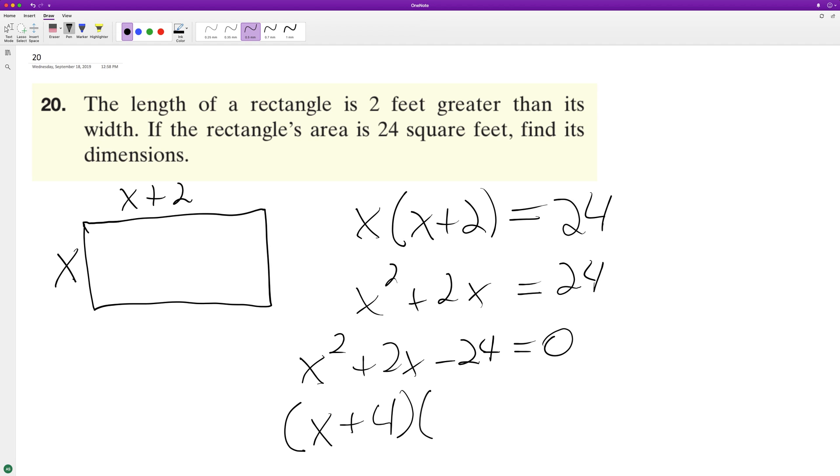x plus 6 times x minus 4 equals 0, so that means that x is going to equal negative 6 or 4. We can't have a negative value so it's likely going to be 4.